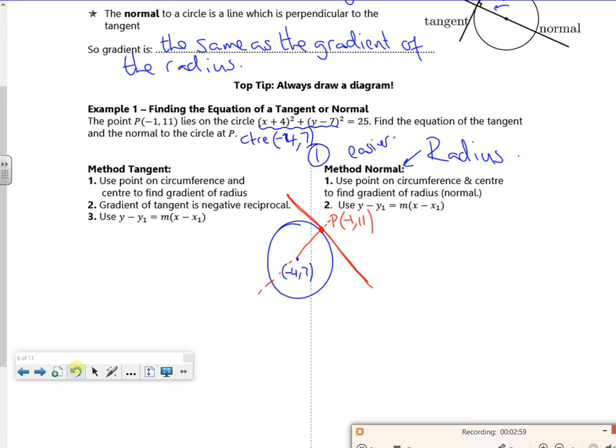So first of all, I want the gradient. I'm doing the gradient from (-4, 7) through to (-1, 11). If you remember how I do it, it's a change in y, so I'll do right-hand point minus left-hand point, right-hand point minus left-hand point. So that gradient is going to be 4 over 3.